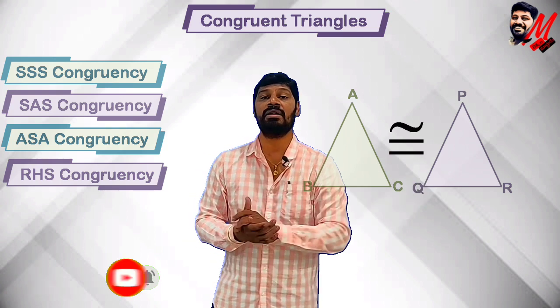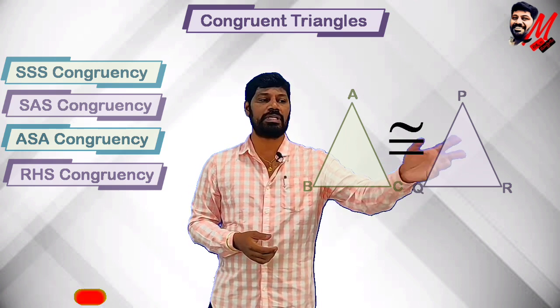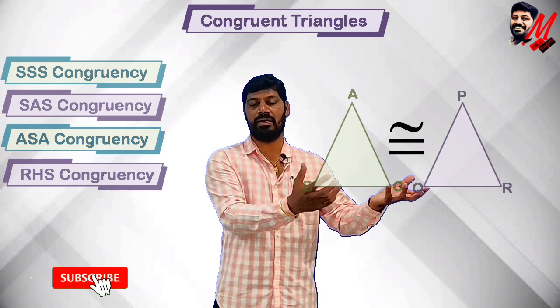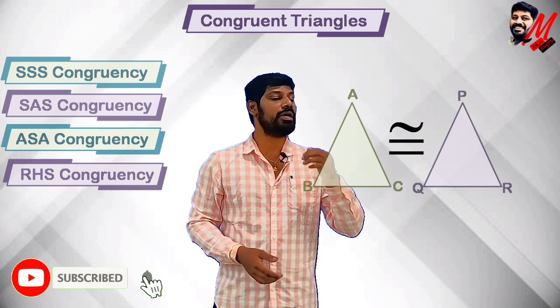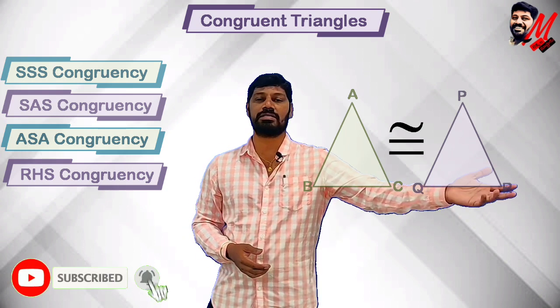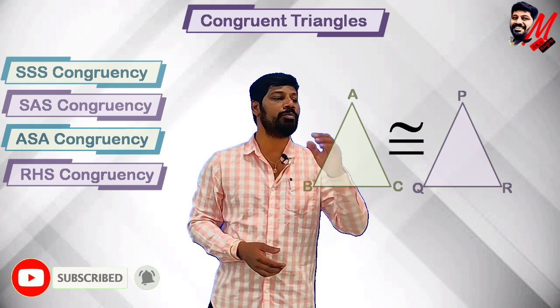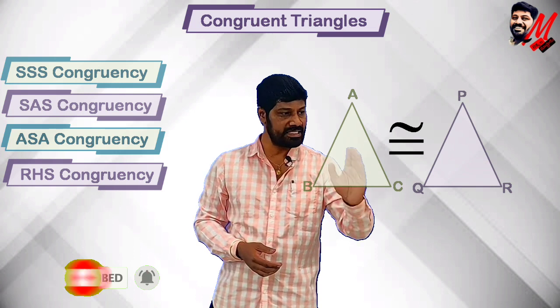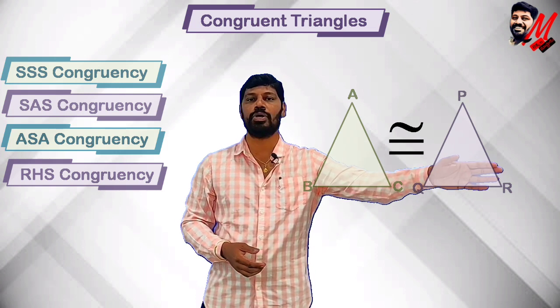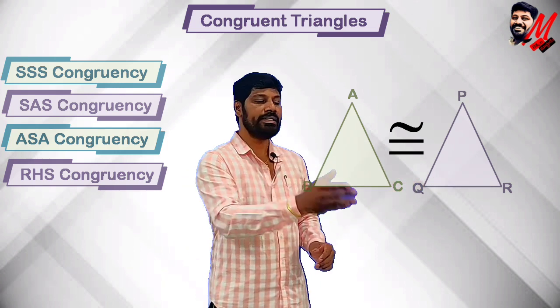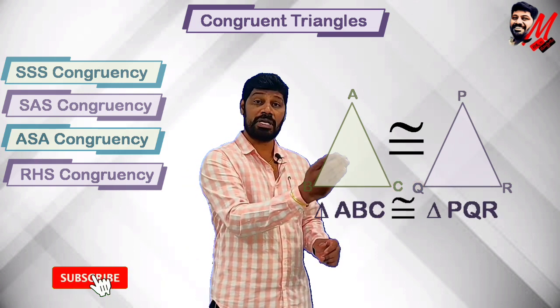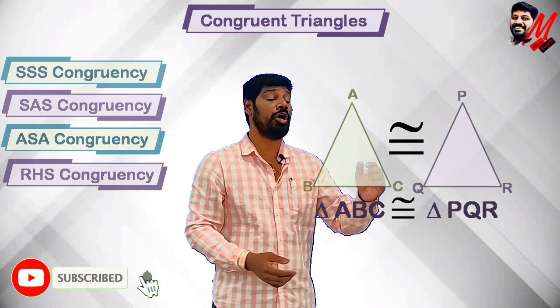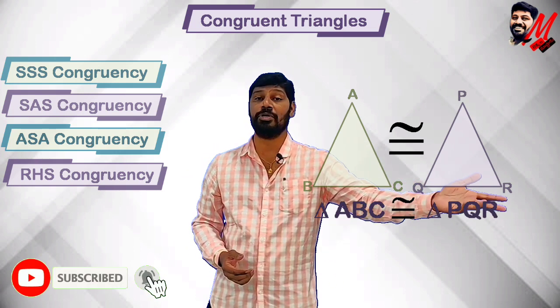This is the symbol for congruency between two triangles. So when we say two triangles are congruent, for example triangles ABC and PQR, we write: triangle ABC is congruent to triangle PQR.